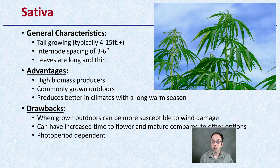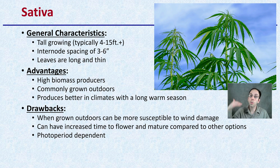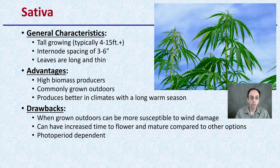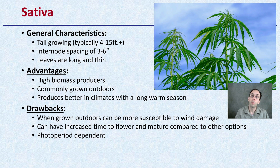Looking first at sativas — in general they grow really tall, 4 to 15 feet, with internode spacing of about 3 to 6 inches and long, thin leaves. The advantage is they produce high biomass and are commonly grown outdoors, performing better in climates with a long, warmer growing season. The drawbacks are susceptibility to wind damage due to height, increased time to flower and mature, and this is also a photoperiod-dependent strain.